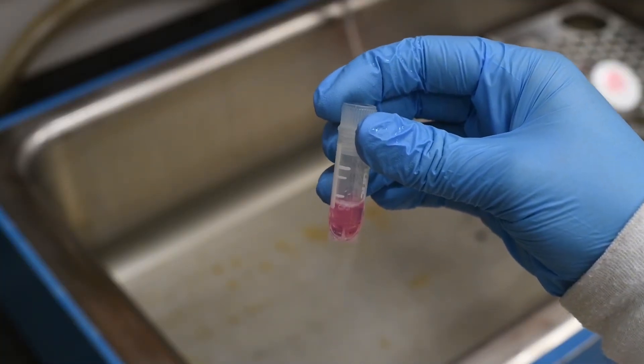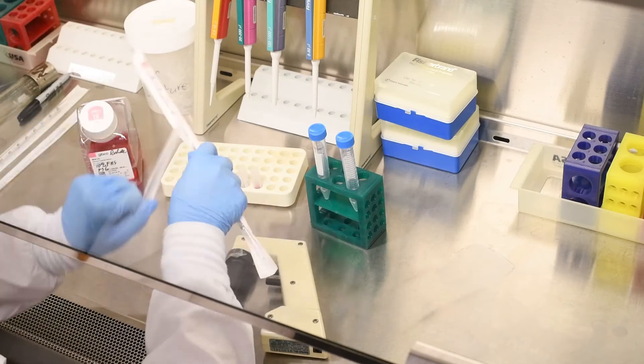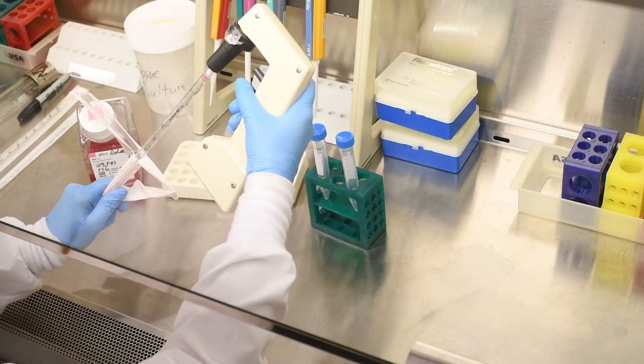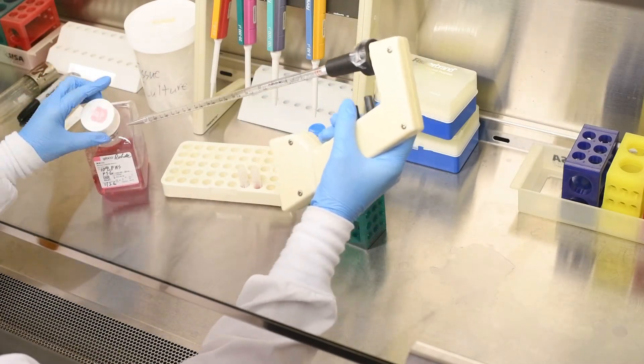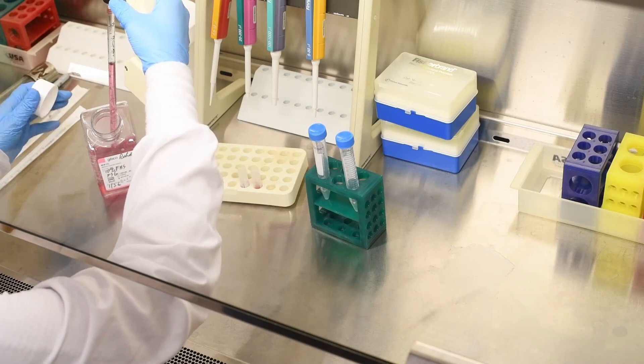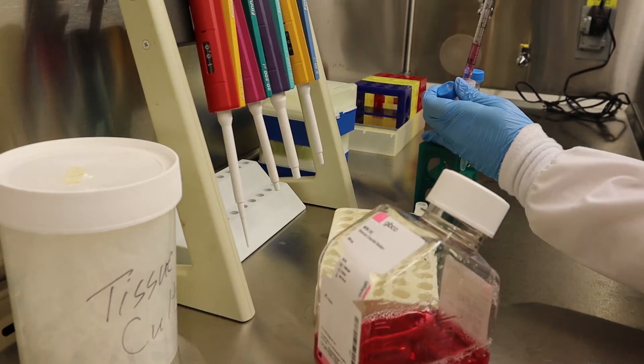Once warm, spray with 70% ethanol and bring to the biosafety hood. Remove both the cells and the media from the cryotube and place them into a 15 milliliter tube with 10 milliliters of fresh media.